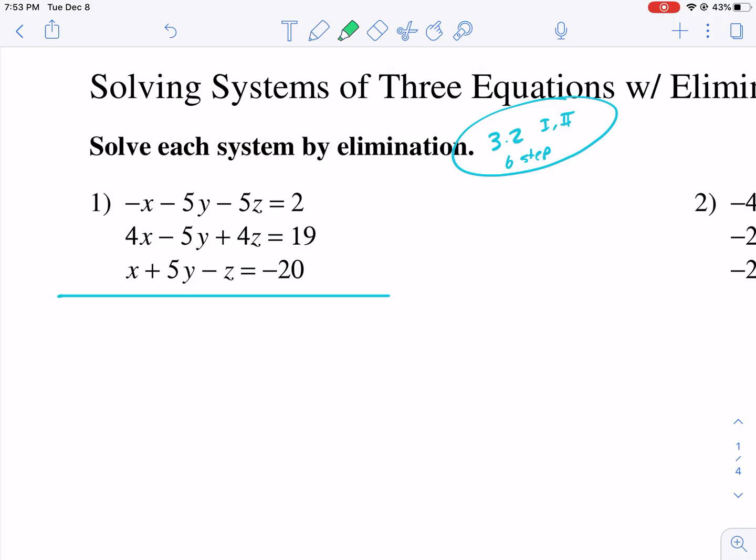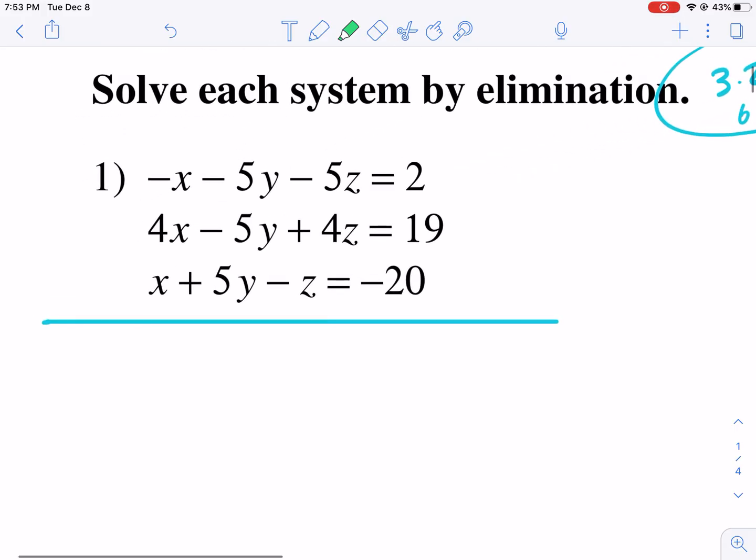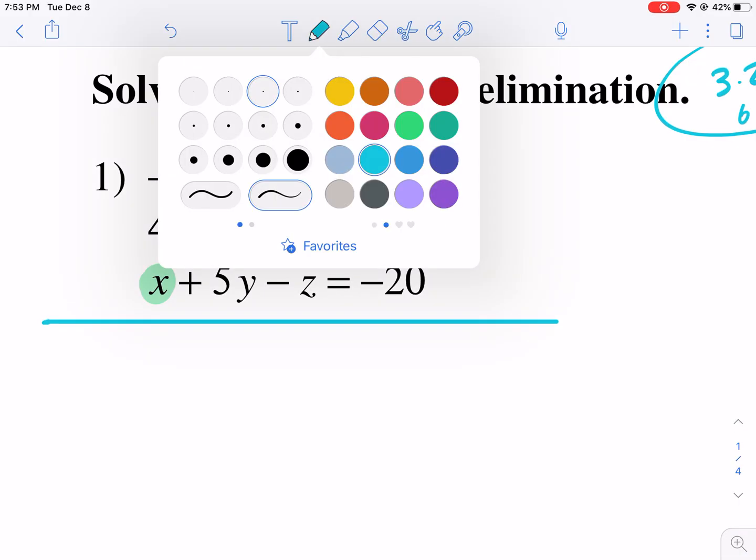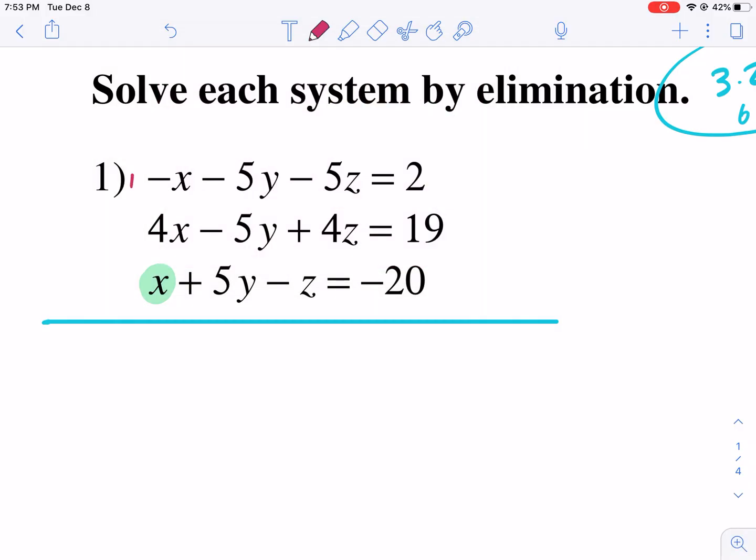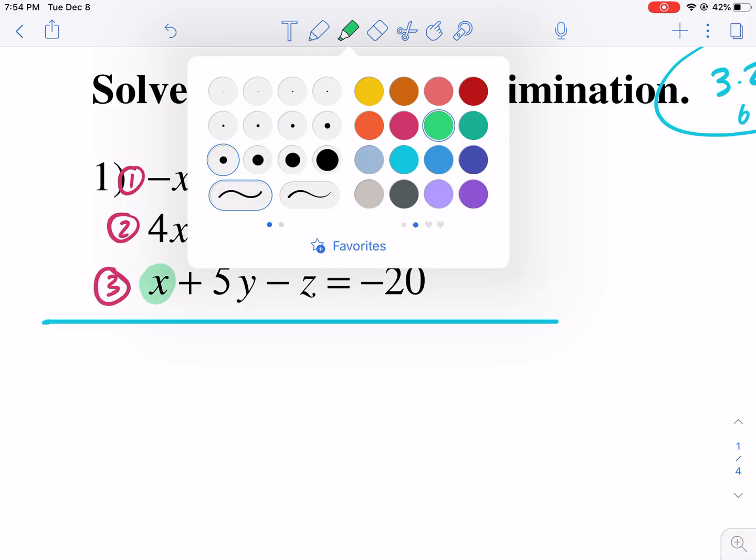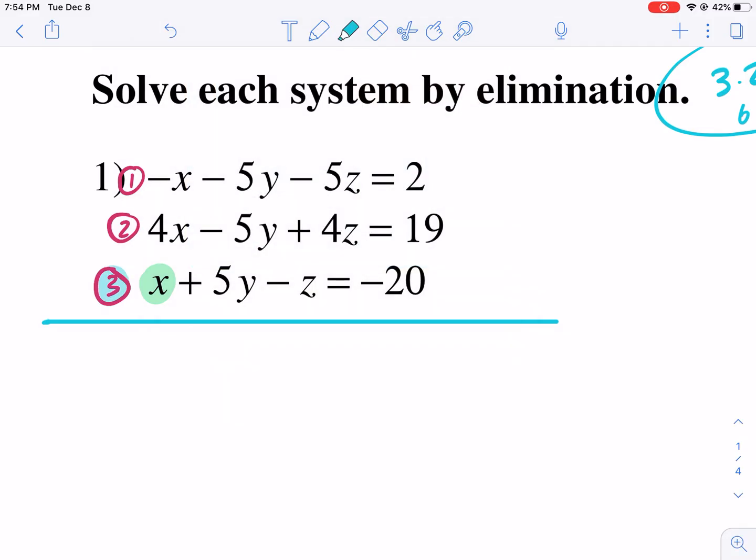Now, the first thing you want to do is you want to pick a focus variable. Ideally, you want something with a coefficient of one. So I'm looking here and I see my focus variable is going to be that guy right there. Before I do that, I almost forgot my first step. That's number the equations so you can keep them straight. So we have one, two, three, and three had my focus variable. So this is going to become my working equation.